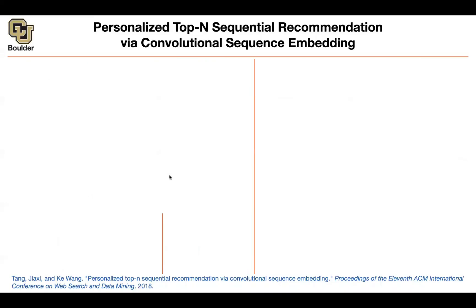Let's move on to changing the architecture and see whether we can use CNNs to do sequential recommendation. The model is called CASER — the Convolutional Sequence Embedding Recommendation Model.